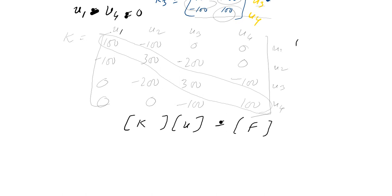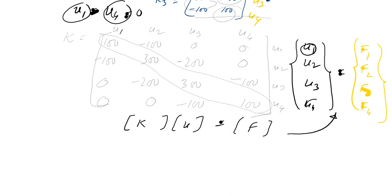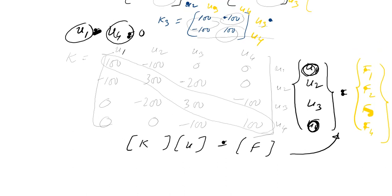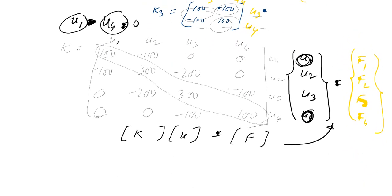The displacement vector is [u1, u2, u3, u4] and the force vector is [f1, f2, f3, f4]. The force is applied at node 3. Applying boundary conditions: u1 = 0 and u4 = 0. The force at node 3 is 500 Newton, and the first and fourth rows and columns are eliminated.